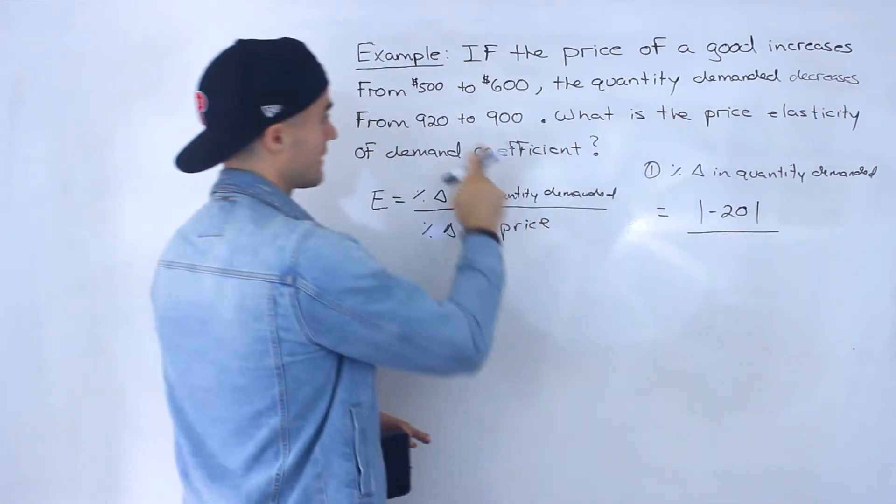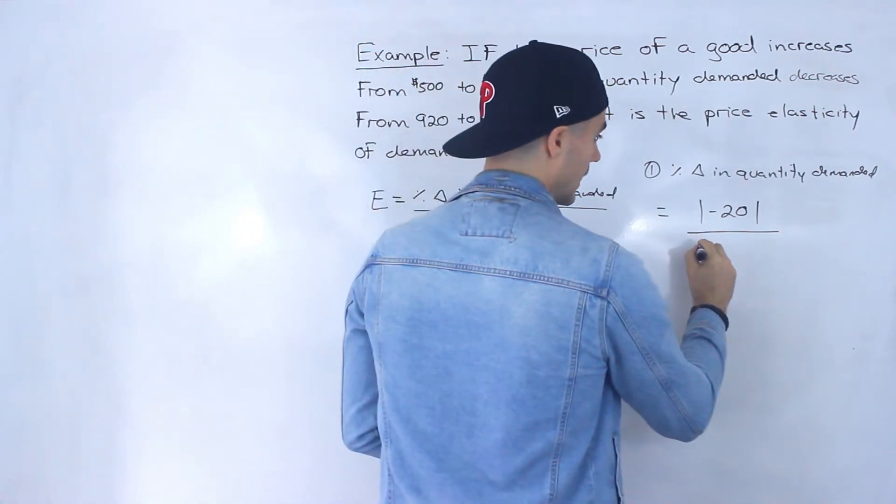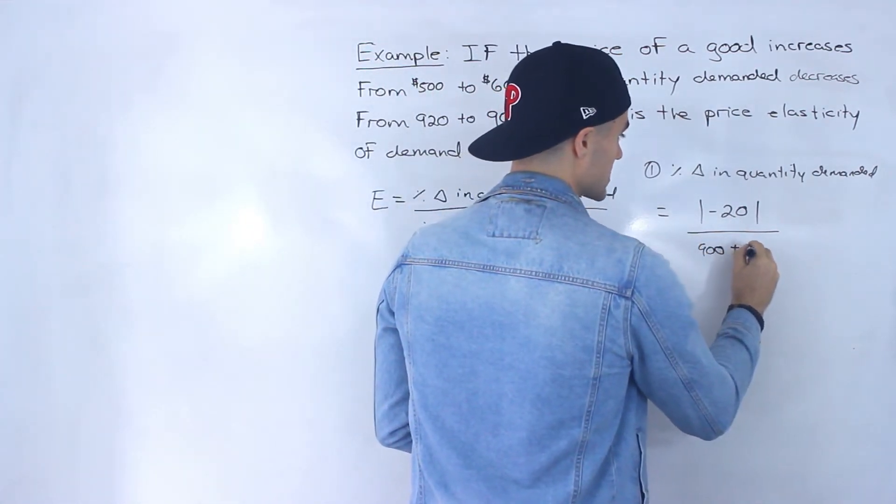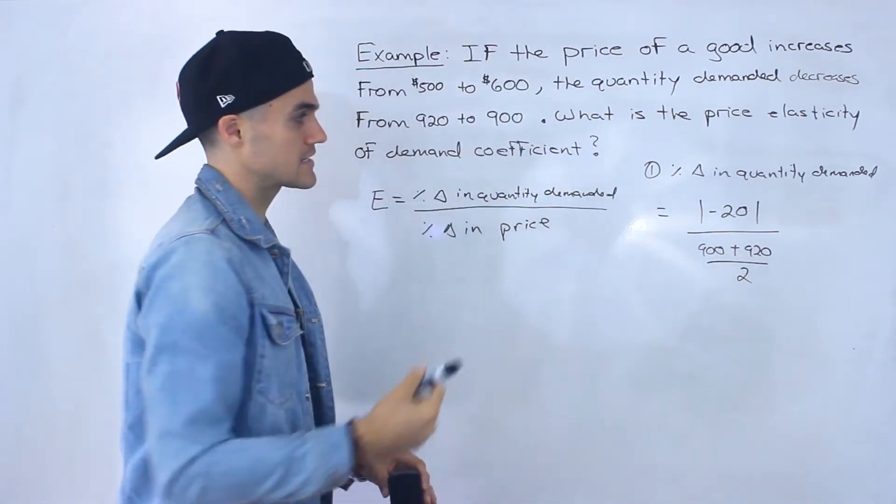And that's going to be divided by the average of these two numbers or the midpoint between the two numbers. So it's going to be $900 plus $920 divided by 2. We can easily tell that it's going to be $910 in this case.